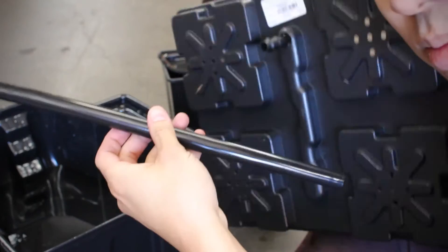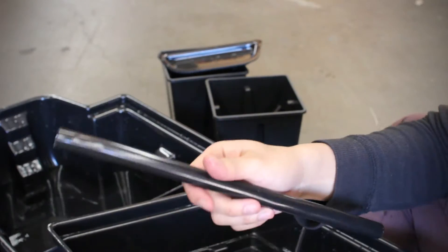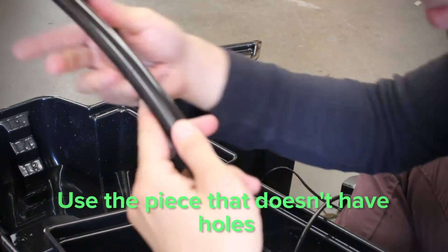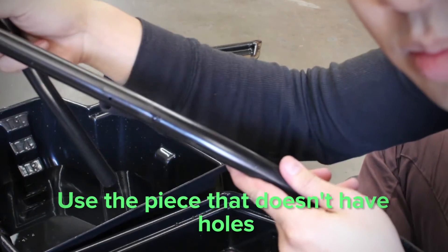Next, you're going to stick this pipe to the bottom side of the connector. Make sure you use the piece that does not have holes in it. It should be the medium length pipe.